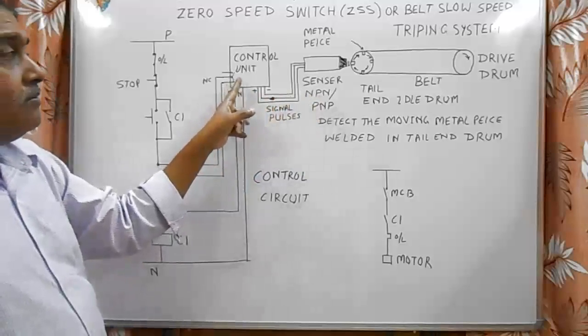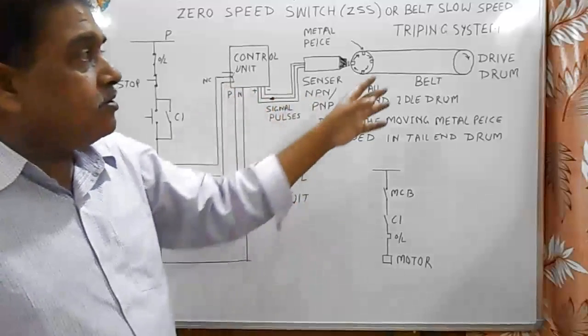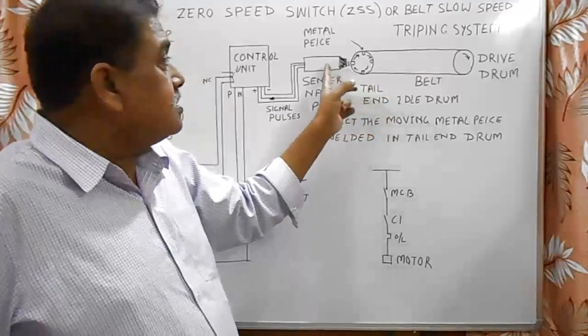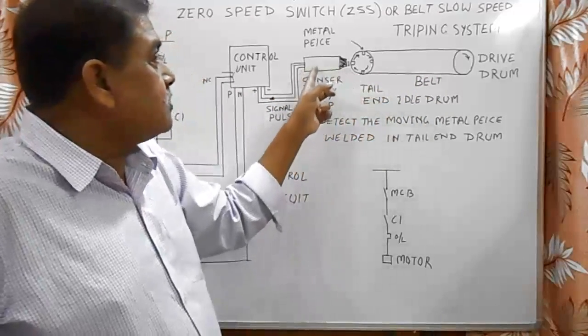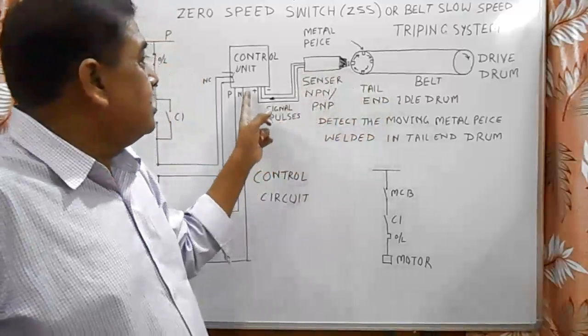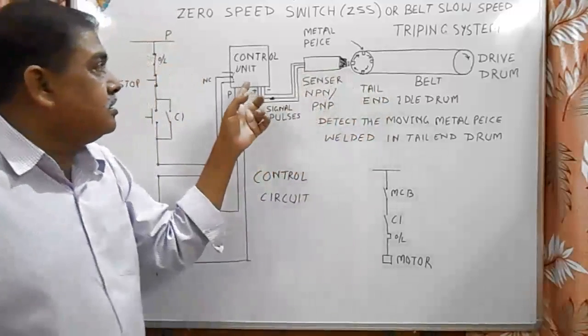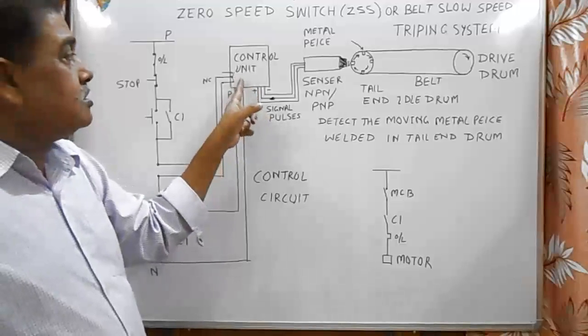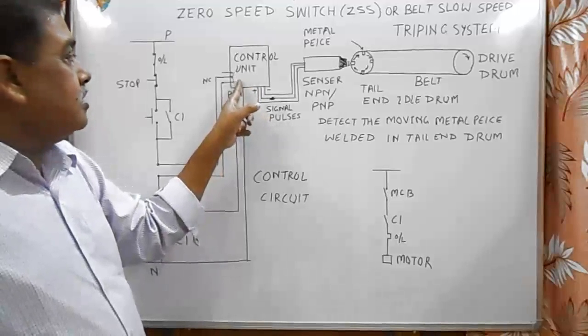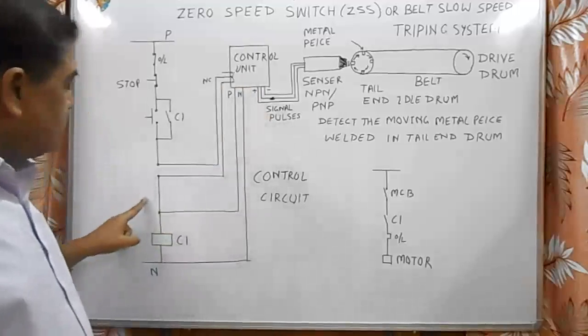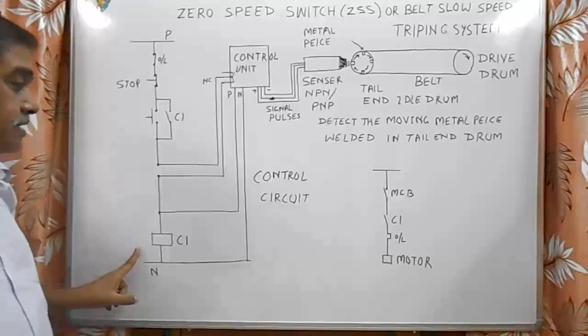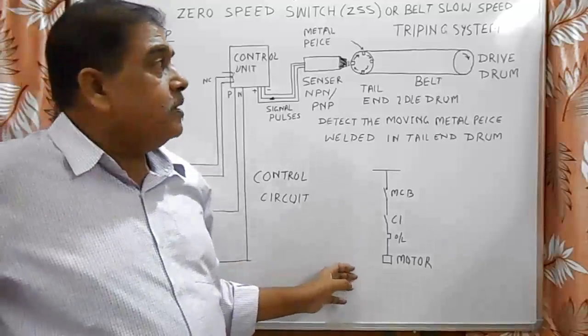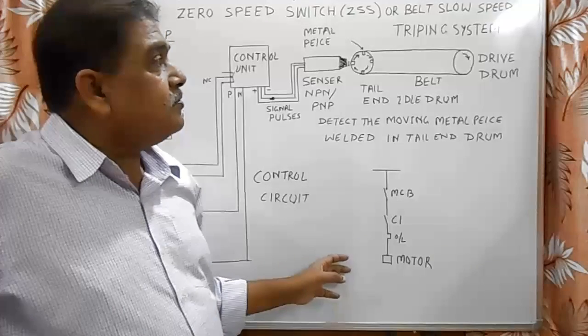Whenever due to some overload conditions this belt speed slows down, then the pulse frequency goes down and this control unit senses that the pulses are not coming at a proper speed. So this makes this contact break, and this breaks the supply of the C1 contactor. The contactor drops down, so the motor stops at slow speeds.